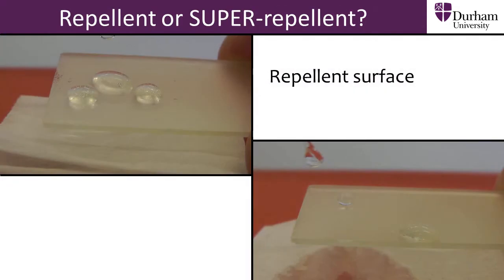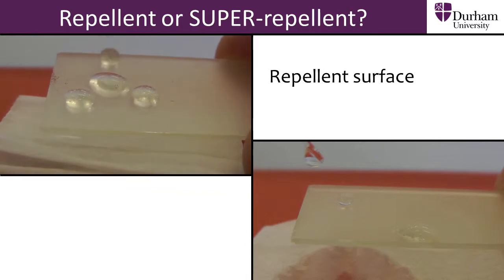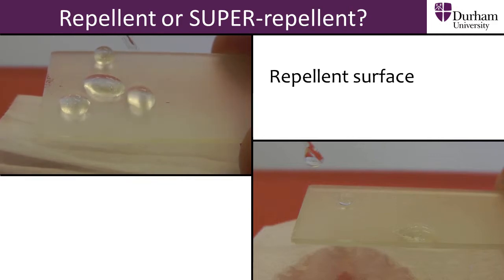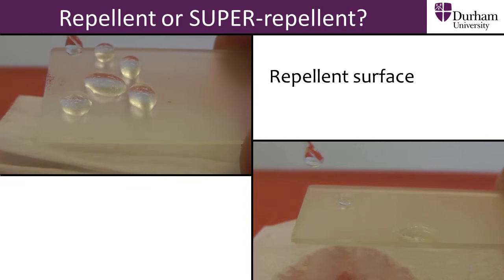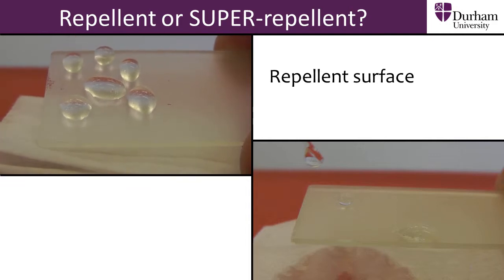Let's look at the difference between a normal repellent surface, which doesn't like water, and a super repellent surface. On the normal repellent surface, we see that water doesn't spread on the surface, but it does stick quite a lot.